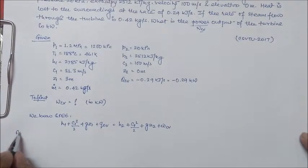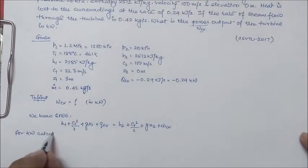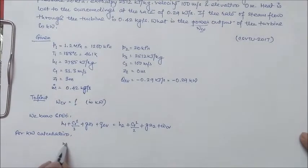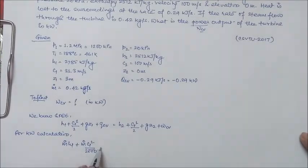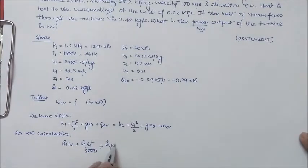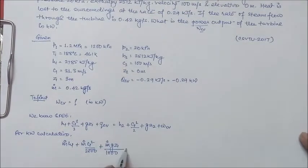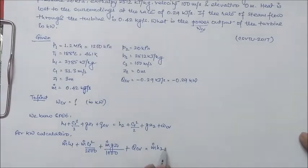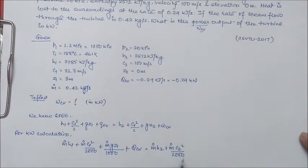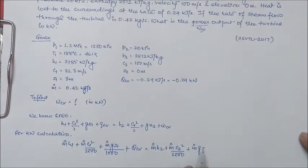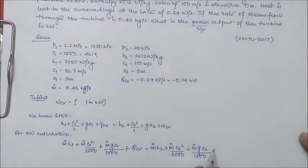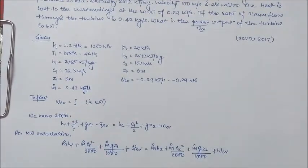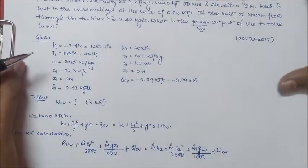Now, for kilowatt calculation, it can be written as m dot H1 plus m dot C1 square by 2000, plus m dot GZ1 by 1000, plus QCV is equal to m dot H2 plus m dot C2 square by 2000, plus m dot GZ2 by 1000, plus WCV. Now everything is in kilowatt terms.